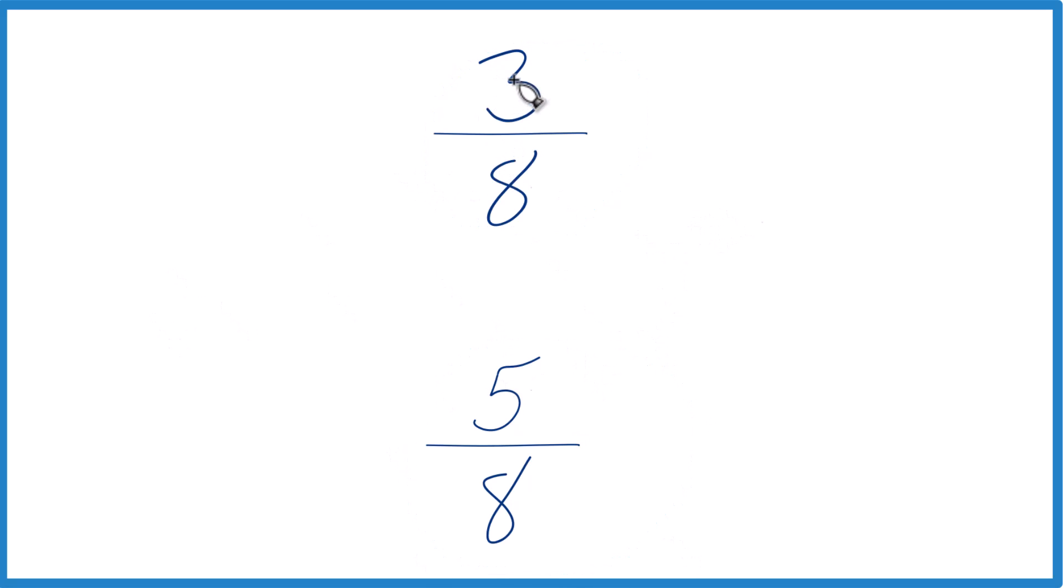You could just divide 3 by 8 on a calculator, then divide 5 by 8 on a calculator and see which one's larger, and you'd find out that 5 eighths, that is larger.